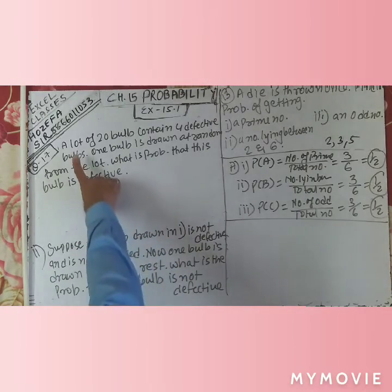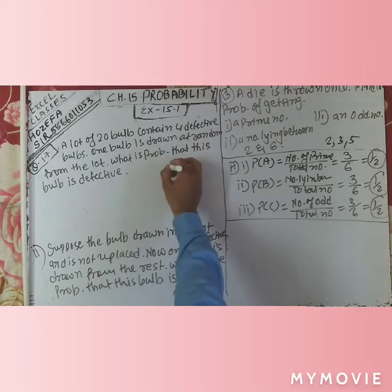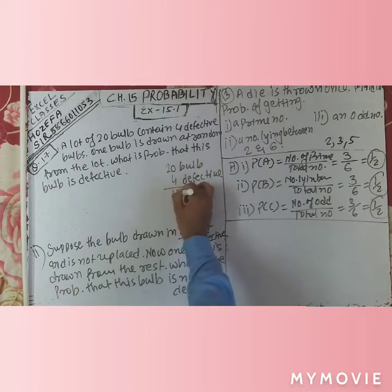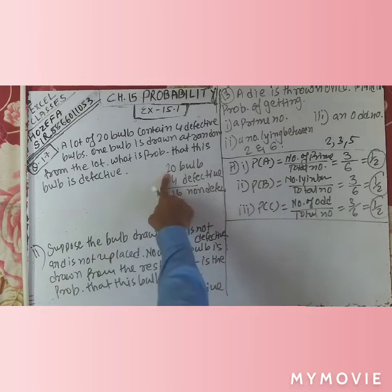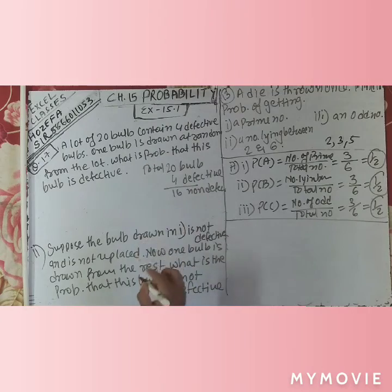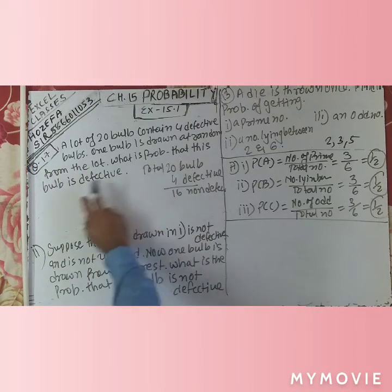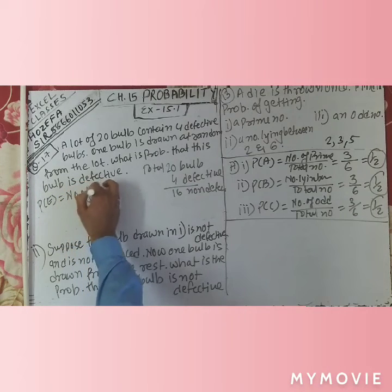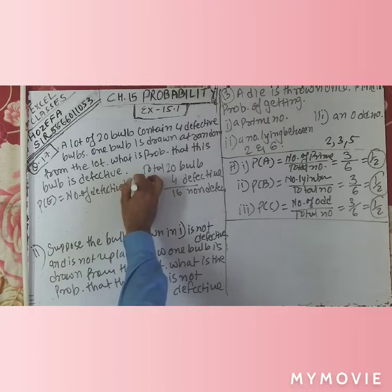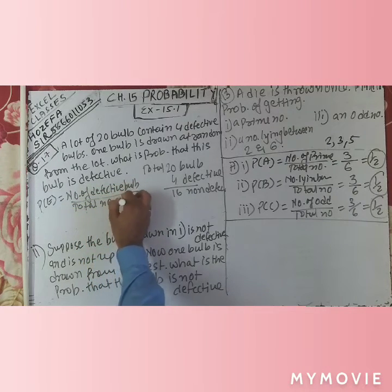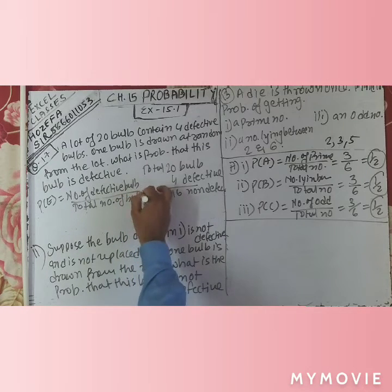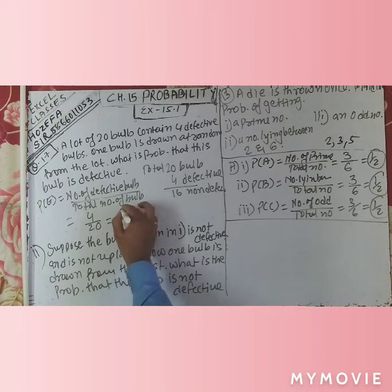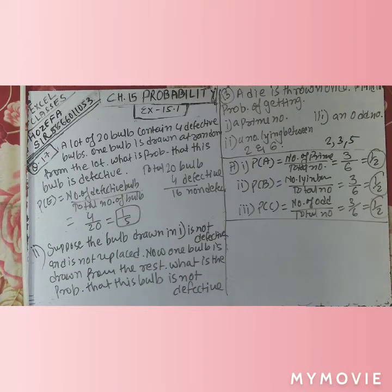Question number 17: a lot of 20 bulbs contains 4 defective bulbs. So there are 16 non-defective bulbs and 20 total. What is the probability that a randomly drawn bulb is defective? P = number of defective bulbs upon total number of bulbs = 4 upon 20 = 1 upon 5.